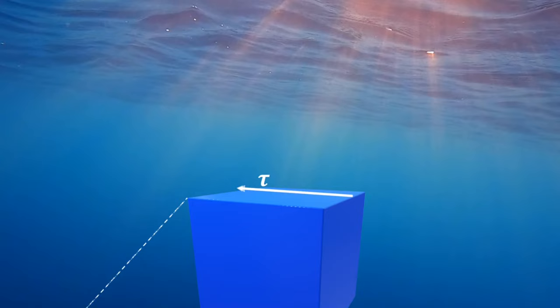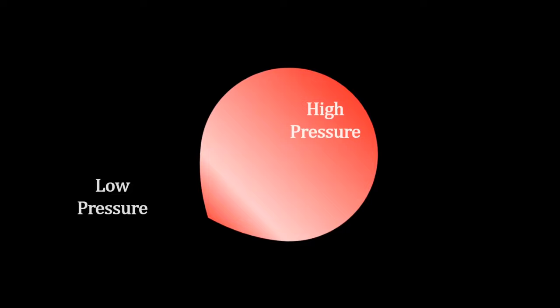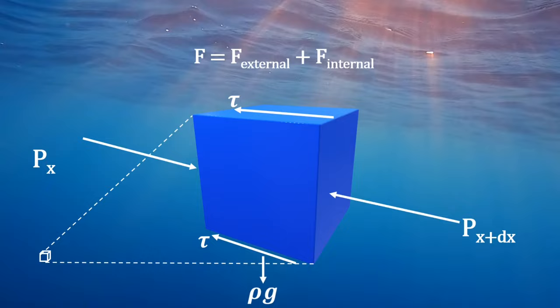Now going back to Newton's law, the forces acting on this cube can be internal or external. Internal forces from within the fluid might be shear stresses from viscosity. External forces might be a pressure gradient—think of when you blow up a balloon: the air pressure inside is greater than the outside, and then when you let the balloon go there's a pressure gradient causing air to flow out, propelling the balloon forwards.